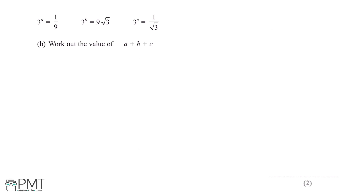3 to the power of c is equal to 1 over root 3. Work out the value of a plus b plus c. For this question we'll need to rewrite all three of these values as powers of 3. Starting with 3 to the power of a is equal to 1 over 9.